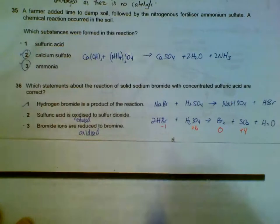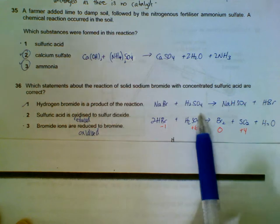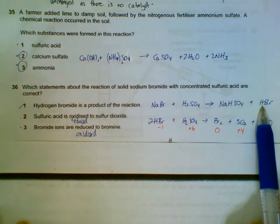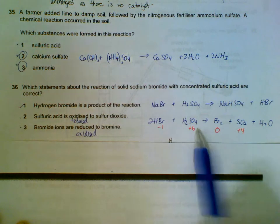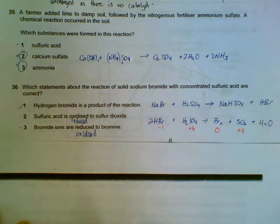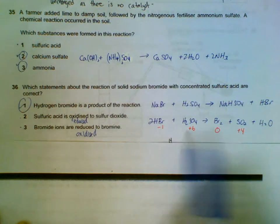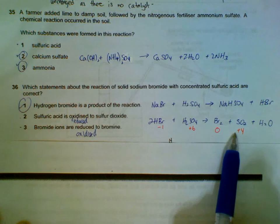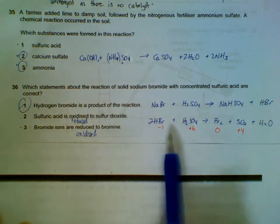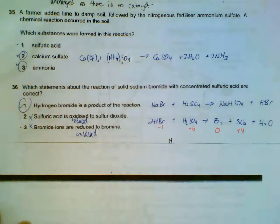Number 36: sodium bromide with concentrated sulfuric acid. First reaction is an acid reaction - we have NaHSO₄ and HBr, but your HBr subsequently will be oxidized to Br₂. So we get hydrogen bromide as a product of the reaction. Sulfuric acid is not oxidized to sulfur dioxide; sulfuric acid is actually reduced - you can check the oxidation state, +6 decreased to +4 for sulfur. Bromide ions are not reduced to bromine; bromide is oxidized to bromine, increase in oxidation state. So only statement one is correct.